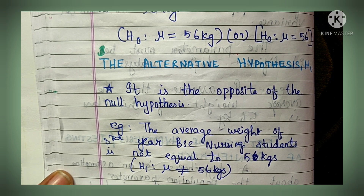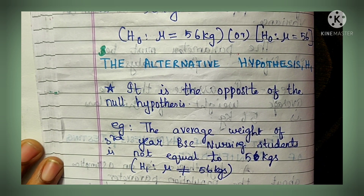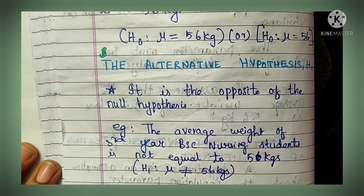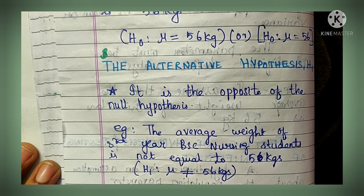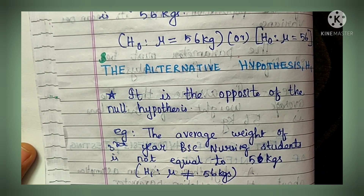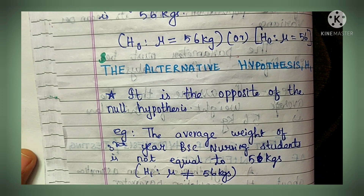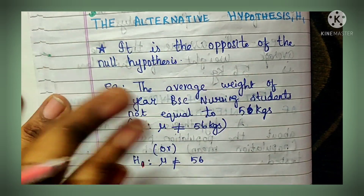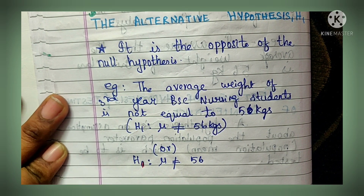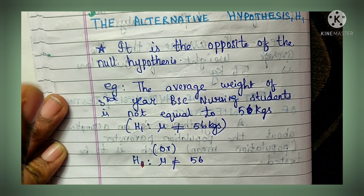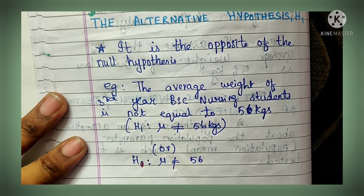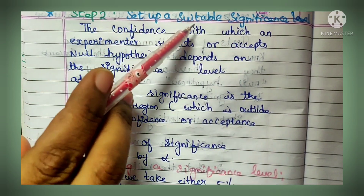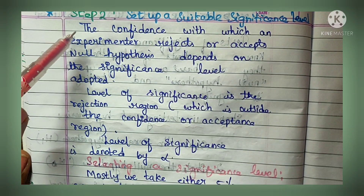So if the null hypothesis is H0: μ = 56 kg, the alternative hypothesis states that the average weight of third year BSc Nursing students is not equal to 56 kg. Therefore H1: μ ≠ 56 kg. In this way you formulate the null hypothesis and the research hypothesis, also called the alternative hypothesis. That completes step one.